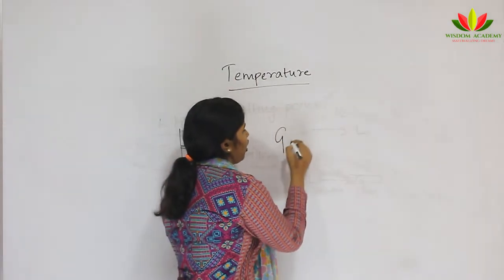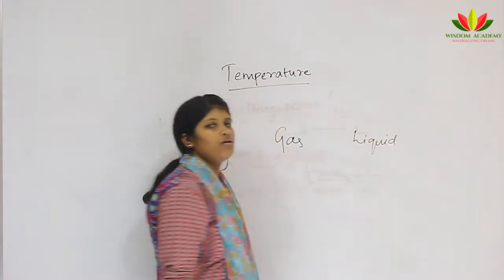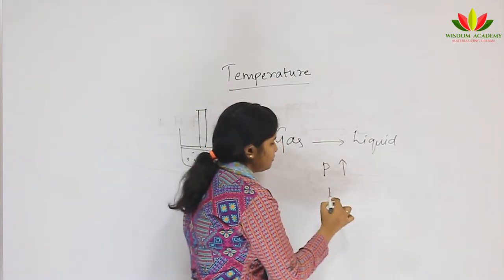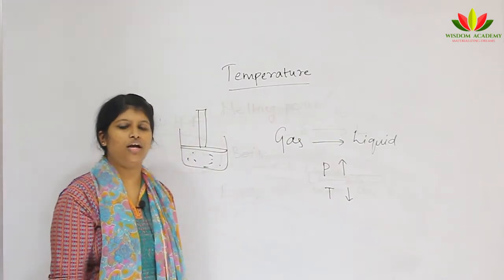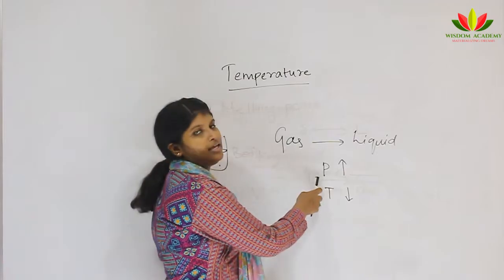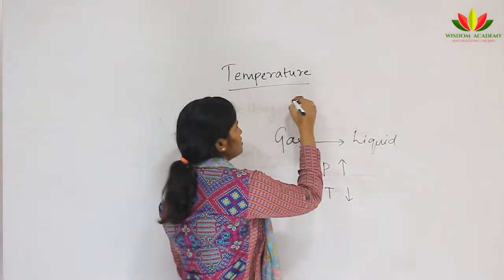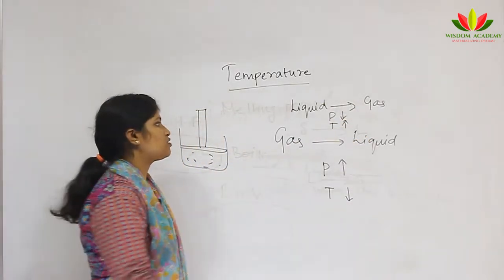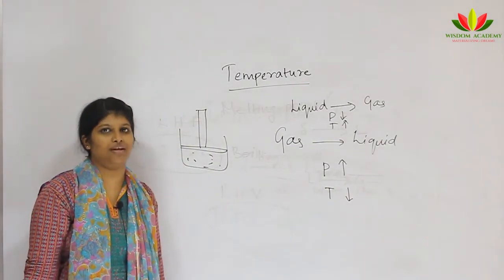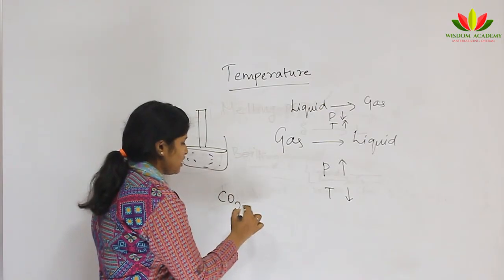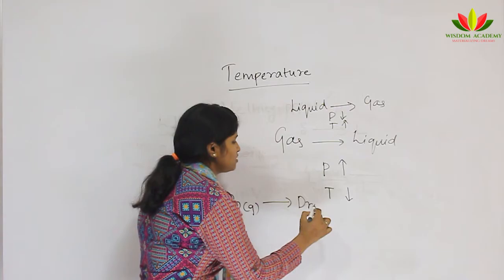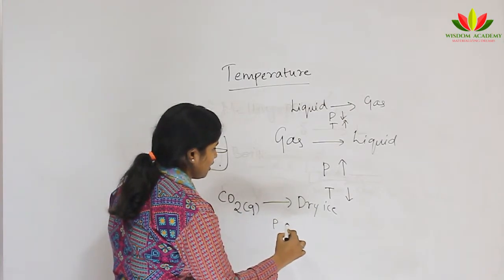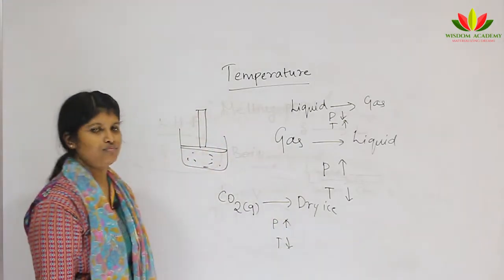To convert gas to liquid, we need two important conditions: increased pressure and low temperature. To reverse this — liquid to gas — pressure should be low and temperature should be high. For example, carbon dioxide, which is a gas at room temperature, can be converted into dry ice, its solid form, by maintaining high pressure and low temperature.